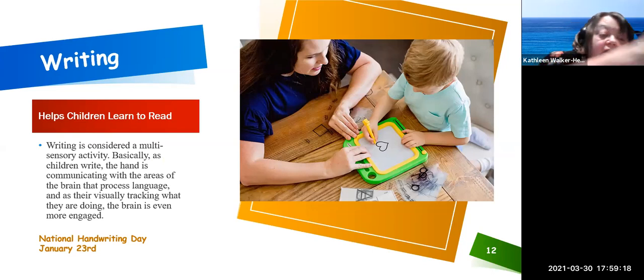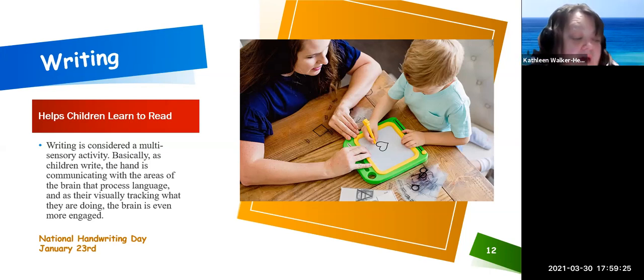Writing helps children learn to read. Writing is considered a multi-sensory activity. Basically, as children write, the hand is communicating with the areas of the brain that process language, and with their visual tracking of what they are doing, the brain is even more engaged. Children who spend more time working with pen and paper over typing have stronger reading and spelling skills because writing activates the parts of the brain that control the ability to read.